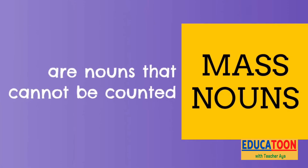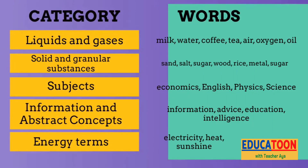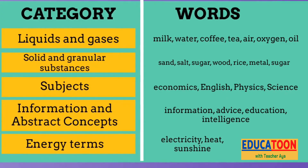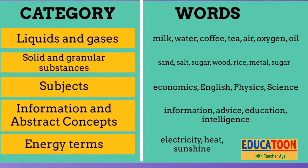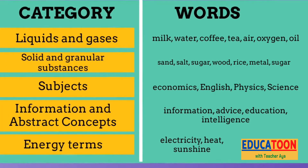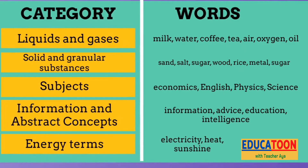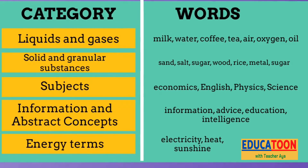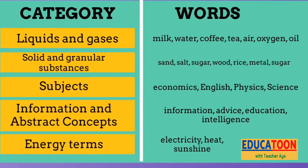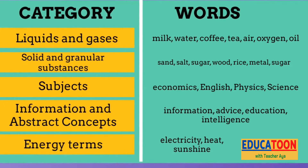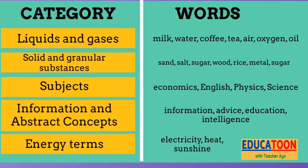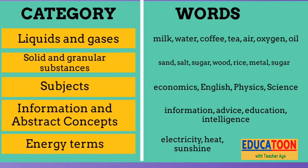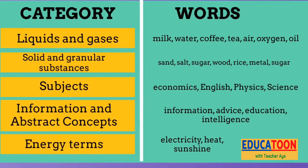Mass nouns are nouns that cannot be counted. Let's categorize the mass nouns: we have liquids and gases, solid and granular substances, subjects, information and abstract concepts, and energy terms. For liquids and gases, some words considered mass nouns are milk, water, coffee, tea, air, oxygen, and oil. We do not necessarily have to put a letter S to pluralize these words, because they are mass nouns — they cannot be counted.